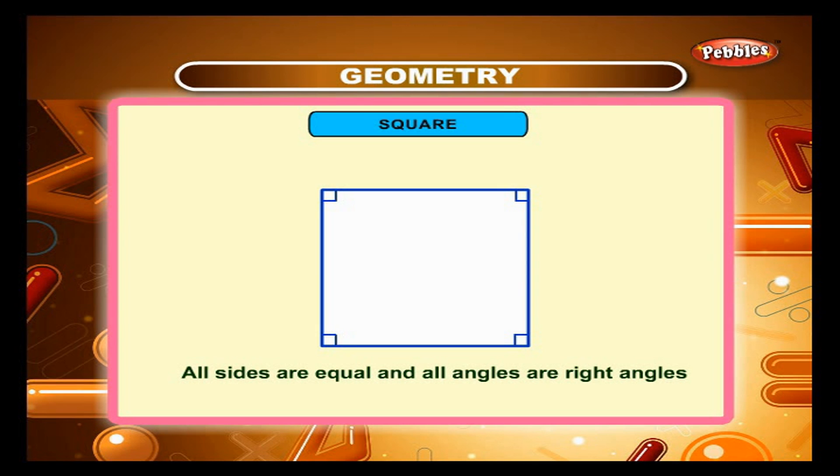Square. A rectangle in which all sides are equal is a square. Thus, in a square, all sides are equal and all angles are right angles. EFGH is a square.